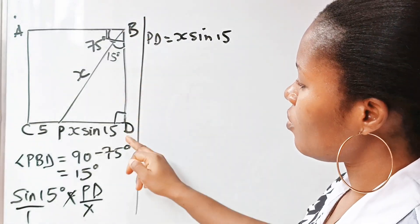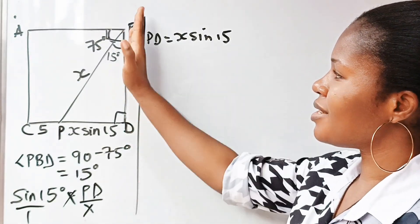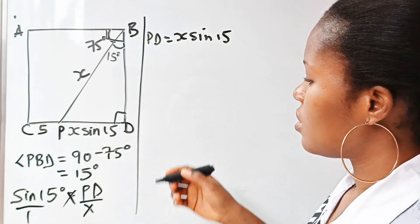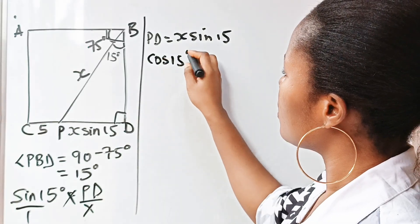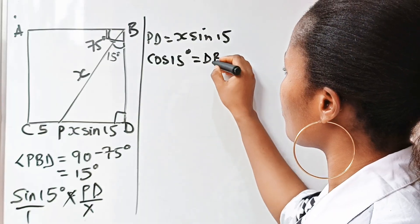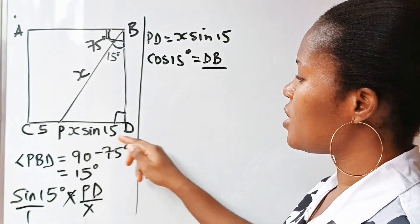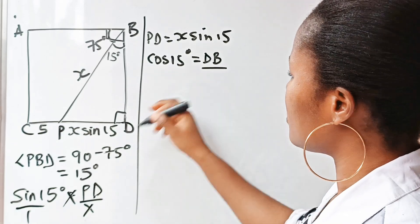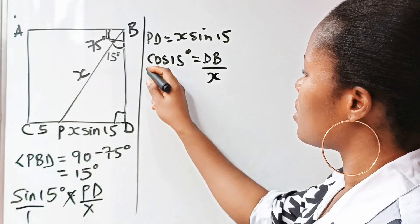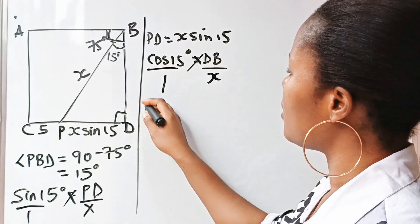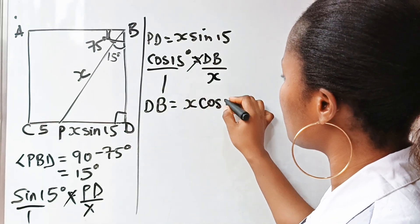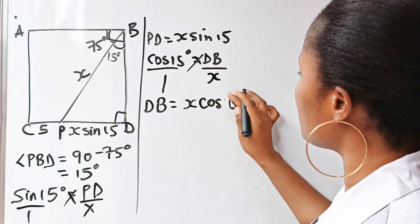Now let us find DB. DB is the adjacent of this triangle, so we can use cosine to find it. Cos 15 is equal to adjacent DB over hypotenuse X. Cross-multiplying, DB is equal to X·cos 15 degrees.